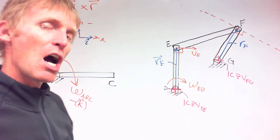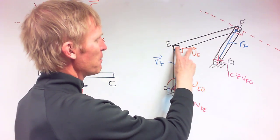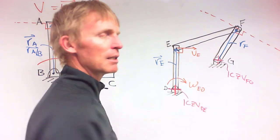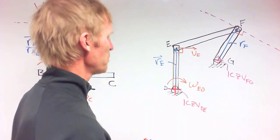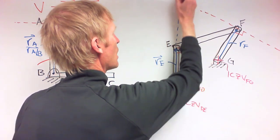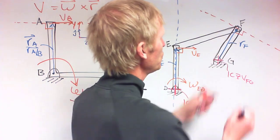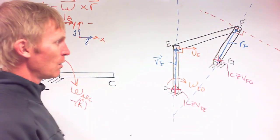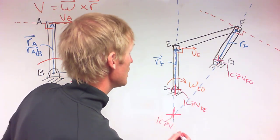Fixed-axis rotation points are always ICZVs. For member EF, we use the non-parallel velocity rule: the velocity at pin E on member DE is the exact same velocity as pin E on member EF — same velocity, same acceleration, not equal and opposite like forces. We extend lines perpendicular to the velocities: extension line one is perpendicular to VE, extension line two is perpendicular to VF's line. The intersection of these two lines is the ICZV of member EF.